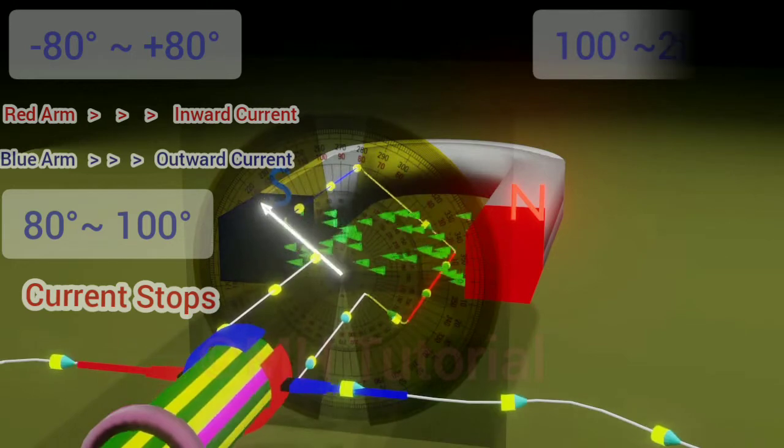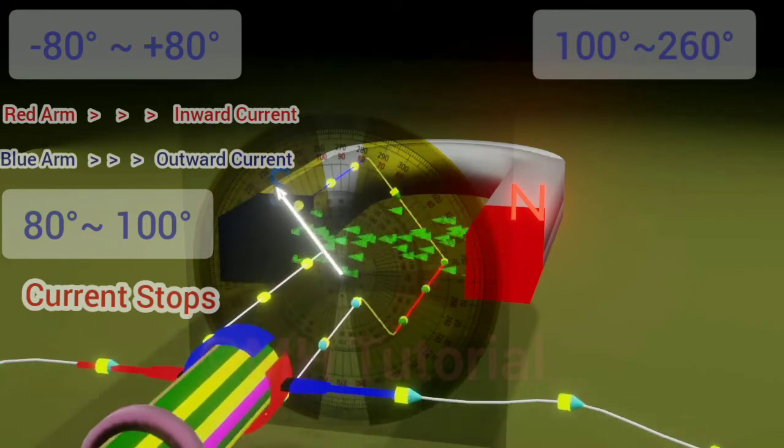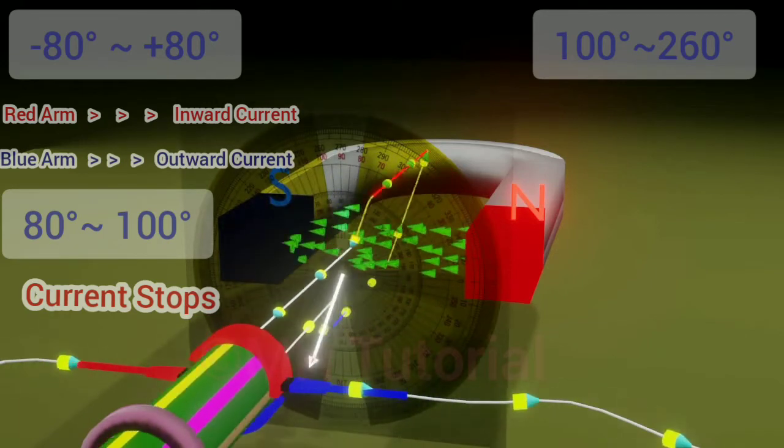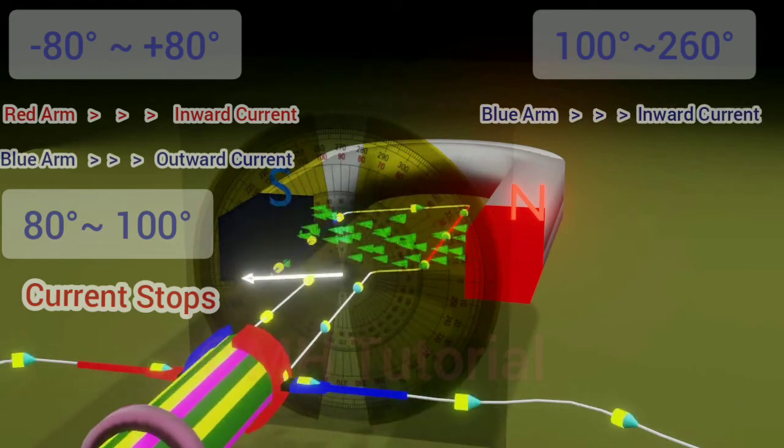Then from 100 to 260 degree angle, again the connection will be established. However, the direction through the armature will be changed. Because of this, in the blue arm near the south pole, current will flow inwards just as it was in the red arm before.